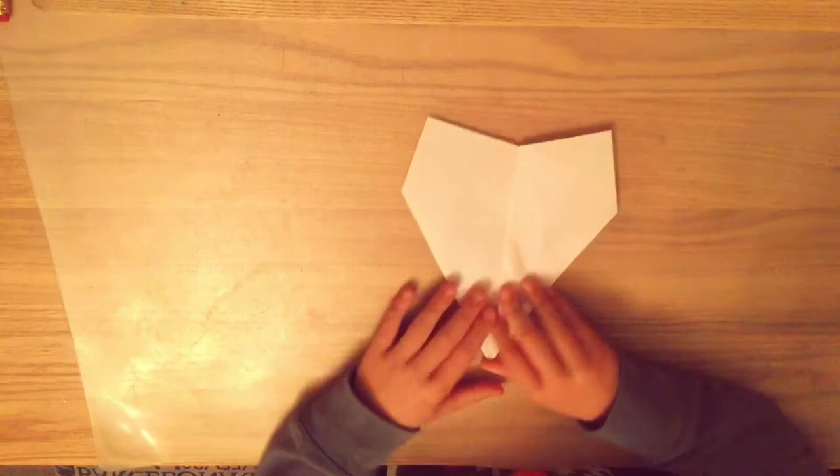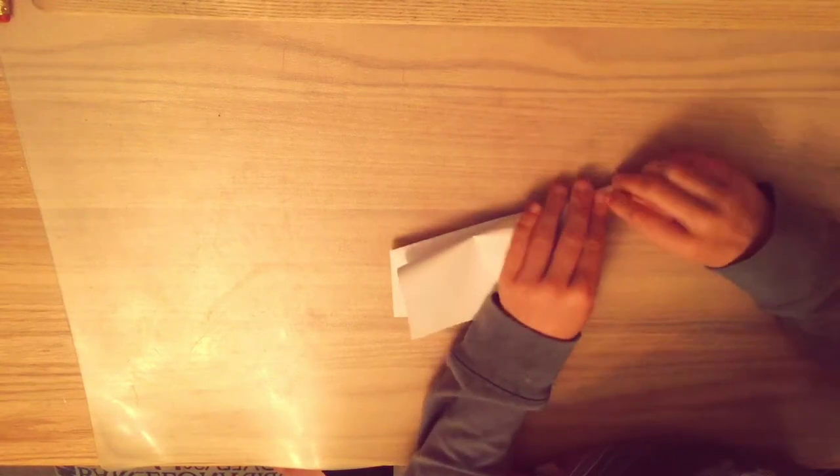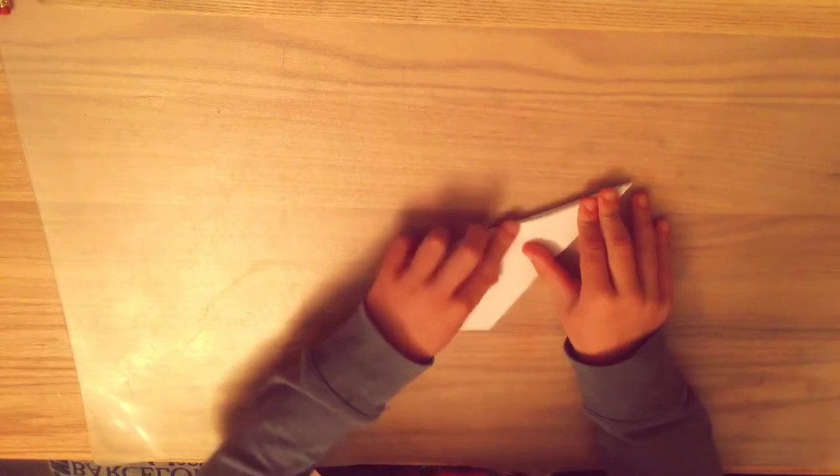Alright, so we've got it like this. We're going to do the same thing to the other side. Try and get the wings lined up as you can. Nose down, and crease.